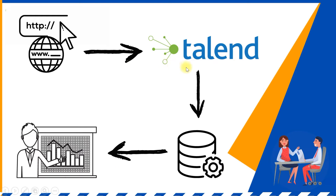Here is the high-level architecture and the data flow diagram for easier understanding. I have a simple HTML page along with JavaScript. This web page accepts certain data as input, and as soon as we click a button, that data will be sent directly to the Talend job. The Talend job will do some transformation and store the data into a database table, which can then be used for real-time reporting.